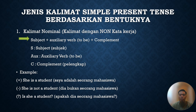Sekarang kita lihat yang kalimat nominal. Mengapa disebut kalimat nominal? Karena dalam kalimat itu tidak ada kata kerja, atau disebut juga dengan kalimat non kata kerja. Jadi dalam kalimat itu, kalau ada subjeknya harus ada verbnya. Kalau disini tidak ada kata kerja, yang kita gunakan adalah auxiliary verb — kata kerja bantu. Jadi kita sudah pelajari di pertemuan-pertemuan sebelumnya mengenai penggunaan verb be atau to be.